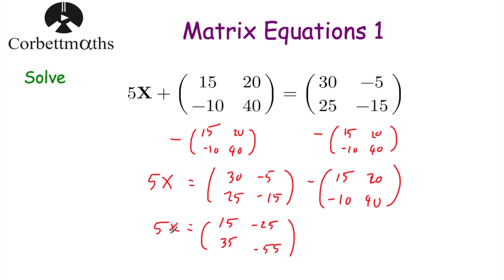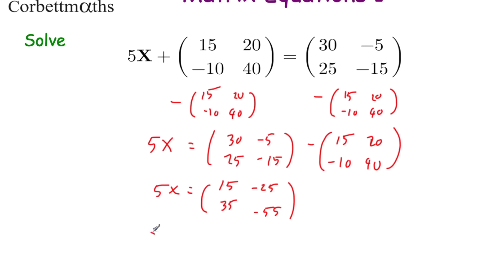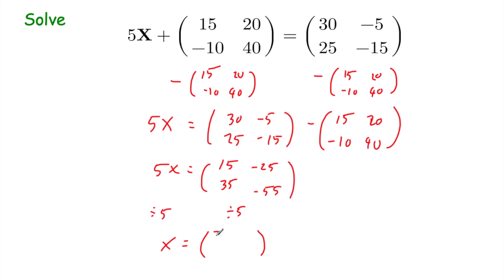Now we don't want 5x, we just want x. Since we're multiplying this matrix by a scalar, we can divide both sides by 5. Dividing each element by 5 gives us: 15÷5=3, -25÷5=-5, 35÷5=7, and -55÷5=-11. So x is equal to [3, -5, 7, -11] and that's it.